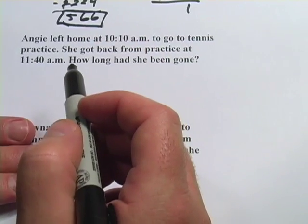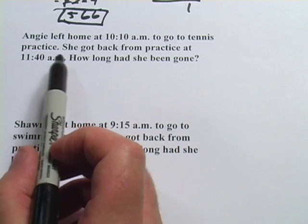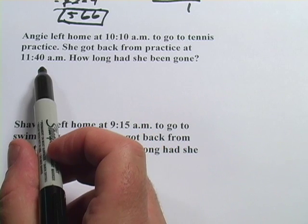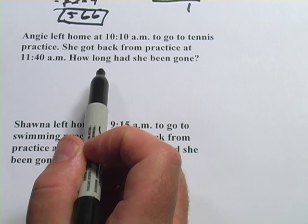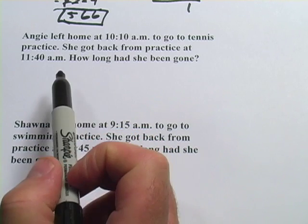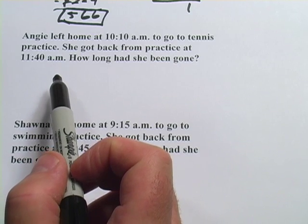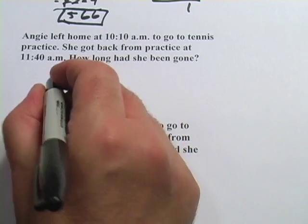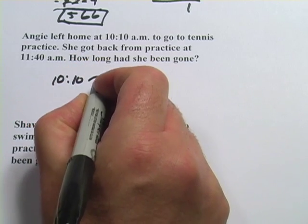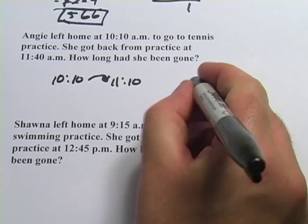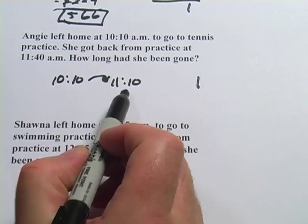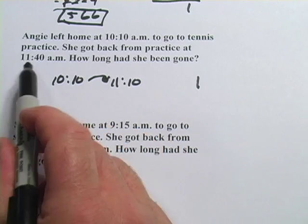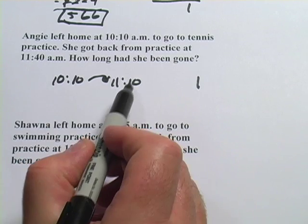So that's how to handle years. Let's look at this one with hours. It says: Angie left home at 10:10 a.m. to go to tennis practice. She got back from practice at 11:40 a.m. How long had she been gone? The way I like to do these — because you can get mixed up with minutes and hours since they're different units — is to count ahead an hour at a time. So I would first go from 10:10 to 11:10. That's one hour. Now I can't go ahead another full hour because I'd end up past 11:40. So the question is how many minutes are between 11:10 and 11:40 — I could just subtract: 40 minus 10 equals 30.